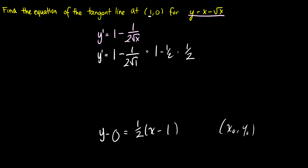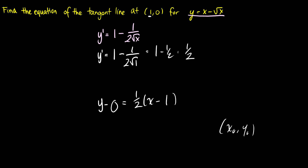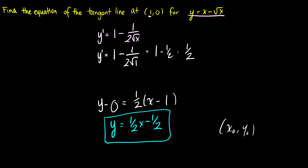We can put that into our equation: y minus 0 equals 1/2 times (x minus 1). This means our tangent line is y equals (1/2)x minus 1/2. This is the tangent line at (1, 0) for y equals x minus the square root of x.